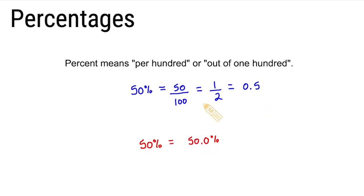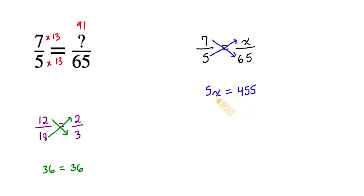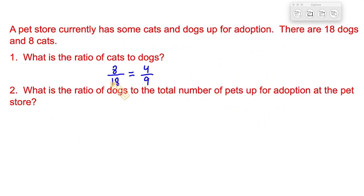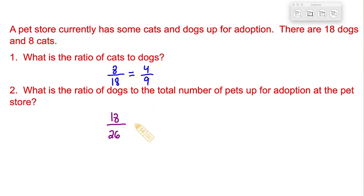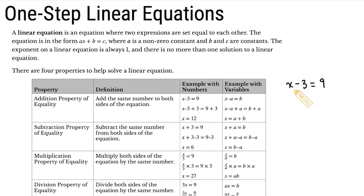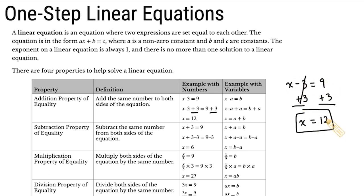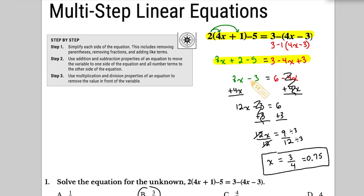A big part of the test is ratios, proportions, and percentages. You need to know proportions and how to solve for X — setting those problems up and working through them. There are also rates of change, like an increase in speed or miles per hour, which may appear in word problems. For algebra, you'll have one-step linear equations, two-step equations, multi-step linear equations, and solving for linear equations in general.